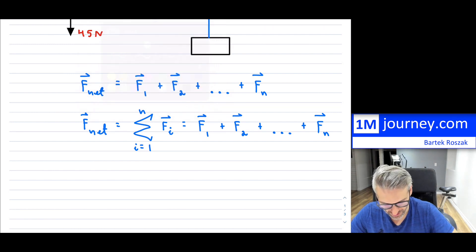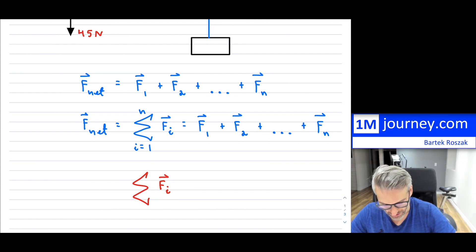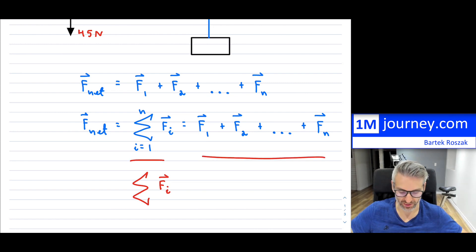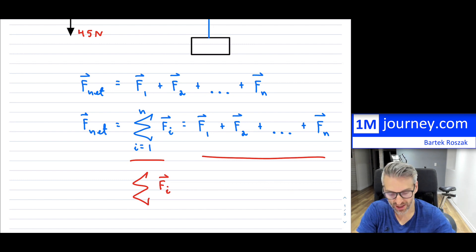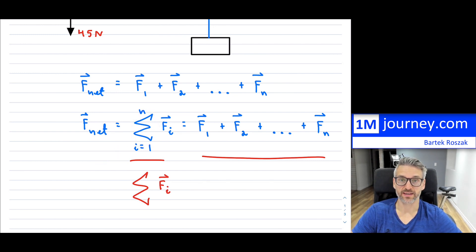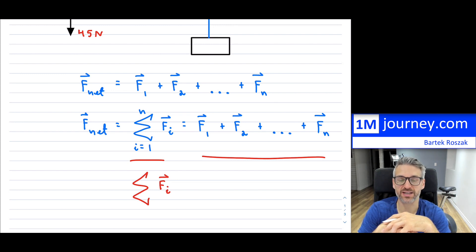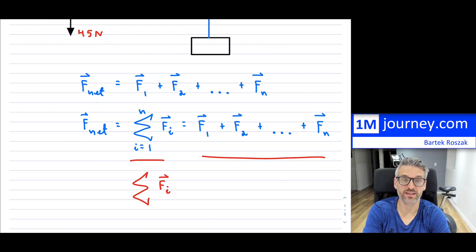Very often this might just be written as sigma F, meaning you're adding up all forces present on the object. Either notation works. If you do more math or science, you'll run into sigma notation quite a bit. In terms of your physics viewpoint, you don't really need sigma because you'll be dealing with simple cases — maybe four or five forces maximum on an object that you're asked to sum up.